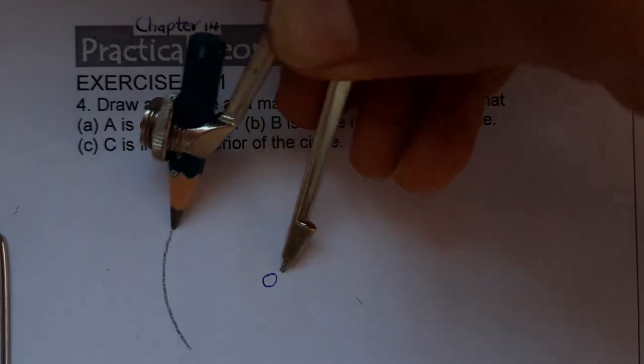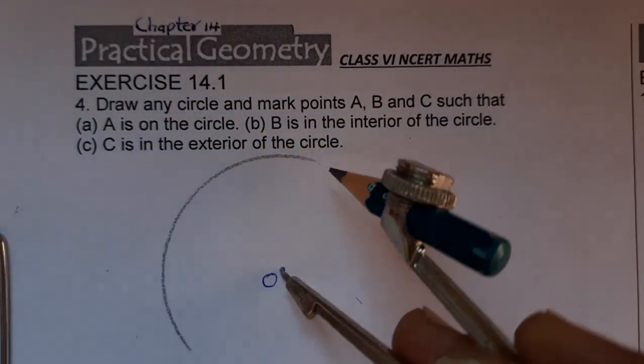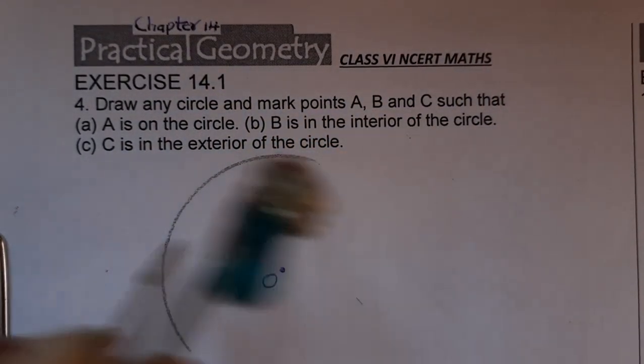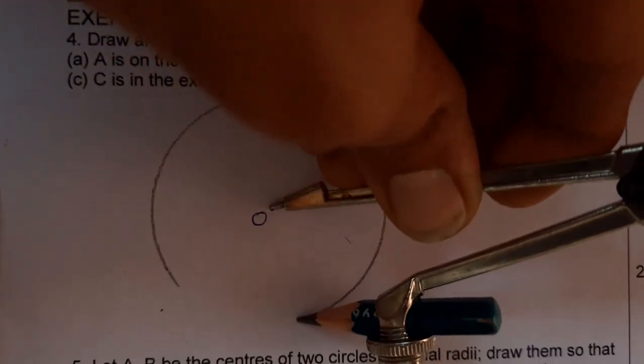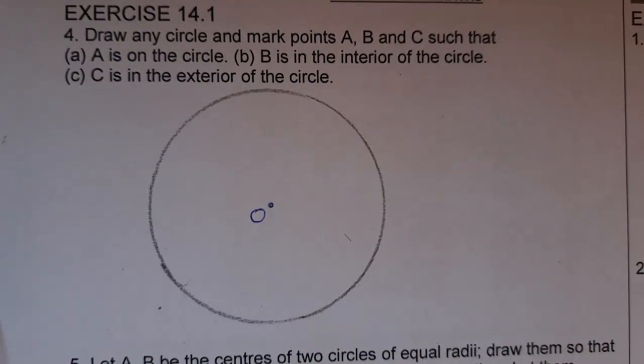So I am taking any radius. It's not given, so we can make any radius. This is my circle.